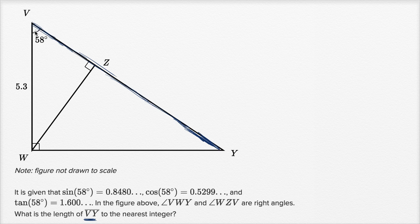We know the angle, 58 degrees, and we know the length of VW. We could view this as the adjacent side to this angle. So we know the angle, we know the adjacent side, and we're trying to figure out the hypotenuse.